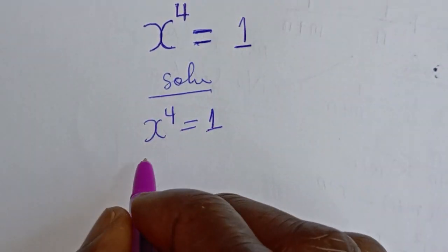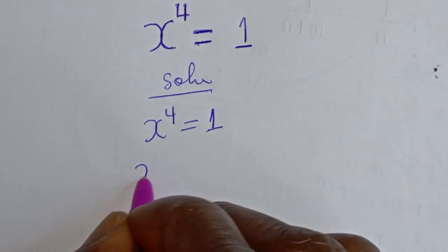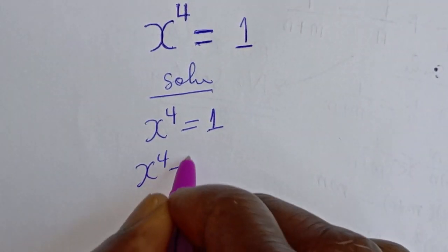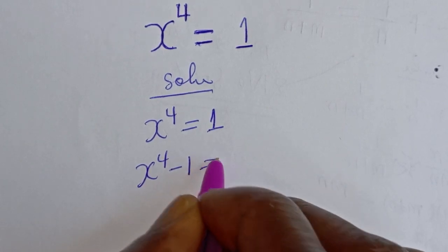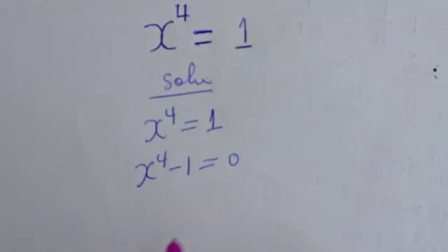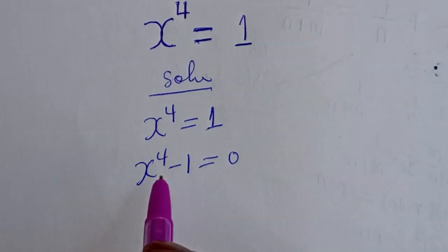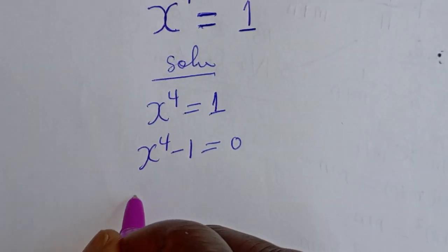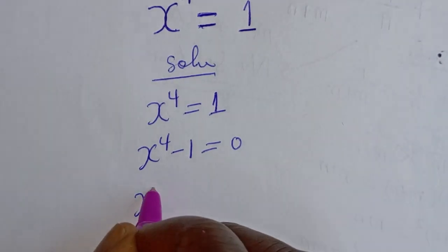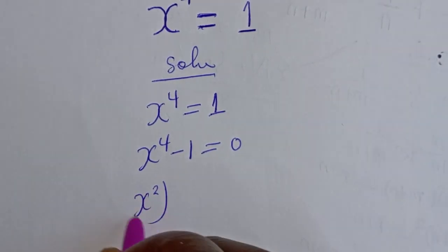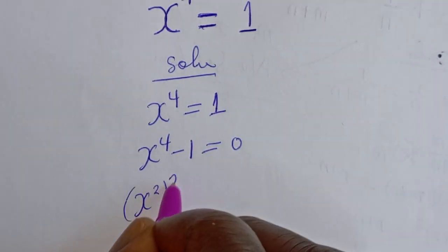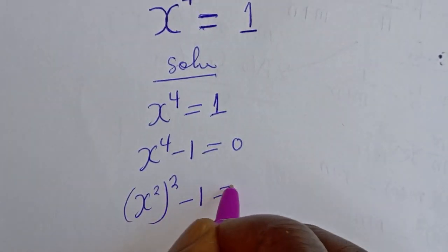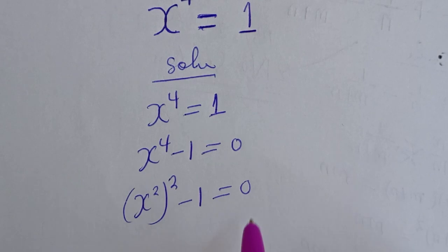Let's bring this to this side. S raised to the power 4 minus 1 is equal to 0. Now, S raised to the power 4 can be written as S square squared, so S squared squared minus 1 is equal to 0.